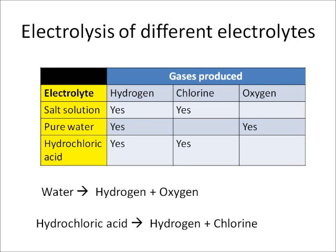If I use pure water I will still produce hydrogen at one electrode but I will produce oxygen at the other electrode. If I electrolyse hydrochloric acid I will produce hydrogen at one electrode and chlorine at the other electrode.